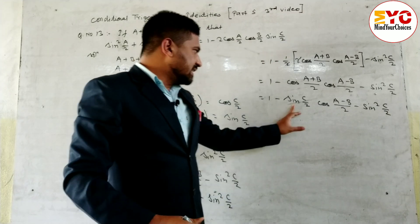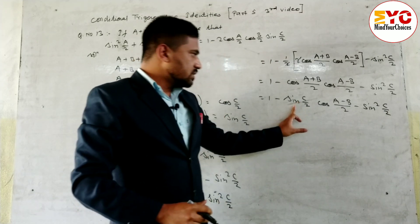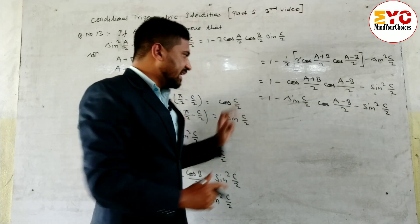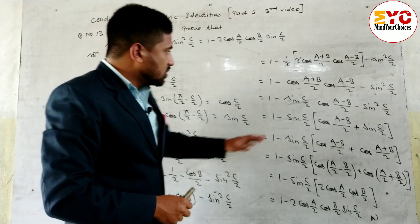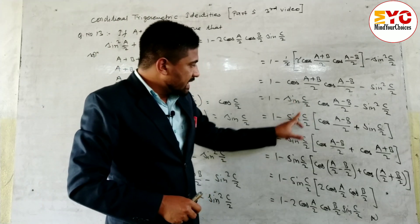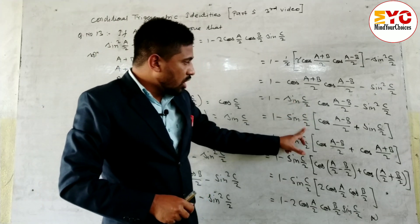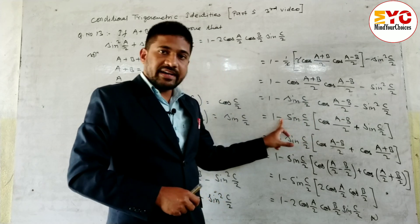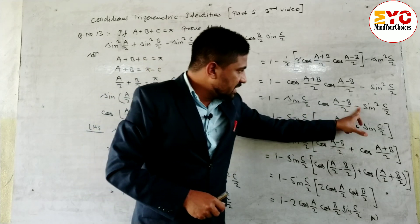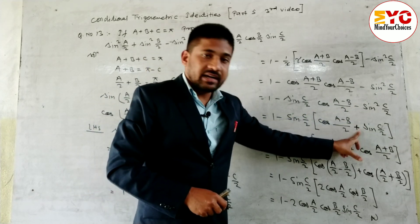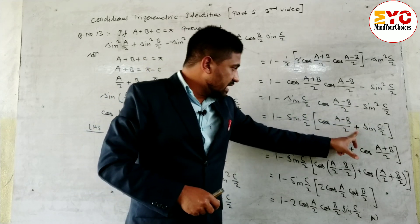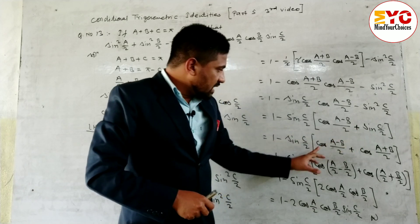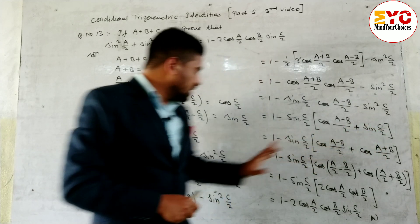Now we can take sin(c by 2) common from both the second and third terms. When we factor it out, the minus sign changes to plus for the sin square term, giving: 1 minus sin(c by 2) times [cos((a minus b) by 2) plus sin(c by 2)].